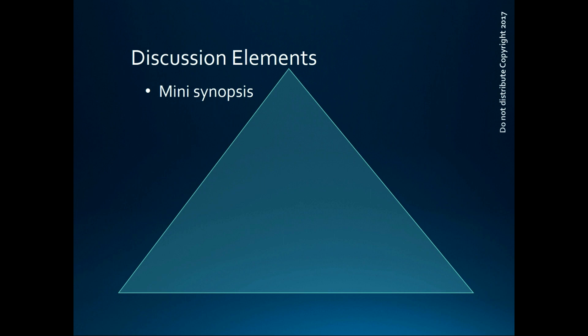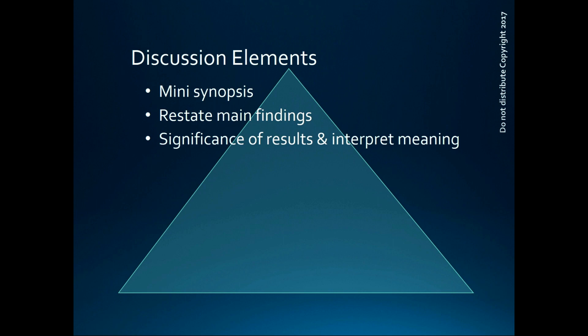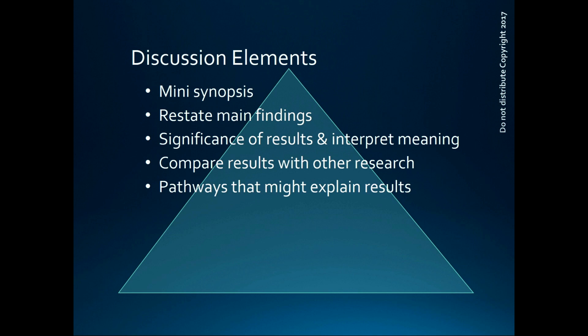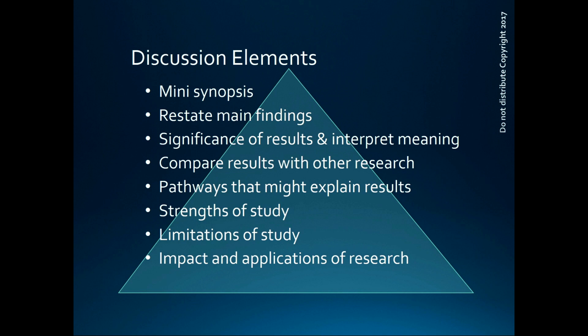Sometimes authors will start with a mini-synopsis of the paper. The main findings are pretty much always summarized, and then the significance of these findings and interpretations are presented. You'll need to identify how your study results fit with other studies — this is where you start to expand outside of your study's results, moving toward a more general scope. If appropriate and given enough space, you may include biological, social, or other pathways or mechanisms that might explain your results. The strengths and limitations of your study follow, then practical implications and applications, and finally suggestions for future work, which are very general and broad.